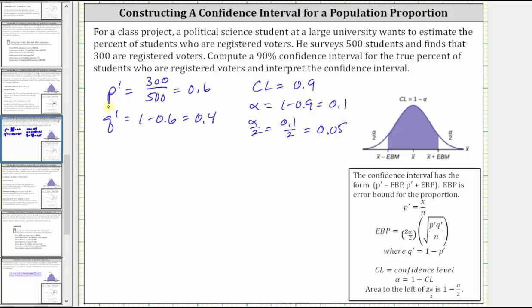So now that we already know p-prime and q-prime, notice to find the error bound, we need to find z sub alpha divided by two, which is a z-score that corresponds to the 90% confidence level. So we indicate the z-score as z sub 0.05. 0.05 is the area to the right of the z-score. The area to the left, which we need if we're going to use technology to find the z-score, is one minus 0.05.